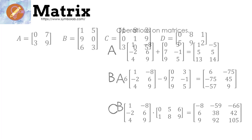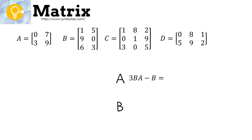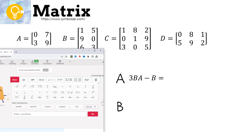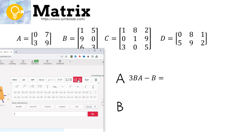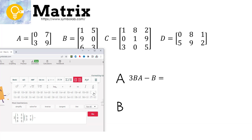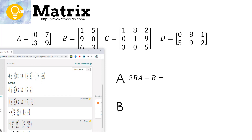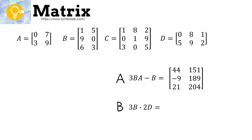I'm going to have you try this one. For the first problem, do 3 times BA minus B using Symbolab — pause the video, do it, then press play. We enter the scalar 3, multiply by matrix B (2 by 3), then multiply by A, then subtract B again and press go. The answer should be: 44, 151, negative 9, 189, 21, 204.